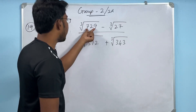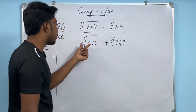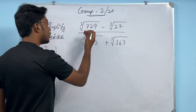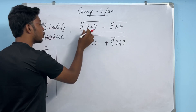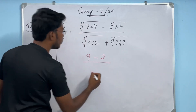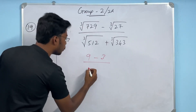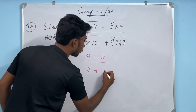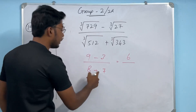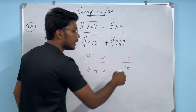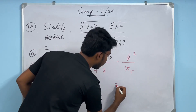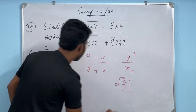Question: (cube root of 729 − cube root of 27) divided by (cube root of 512 + cube root of 343). Cube root of 729 = 9, cube root of 27 = 3, so numerator = 9 − 3 = 6. Cube root of 512 = 8, cube root of 343 = 7, so denominator = 8 + 7 = 15. Cancel common factor 3: answer is 2/5.